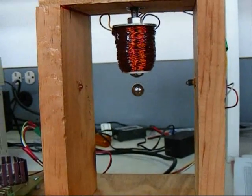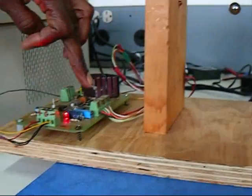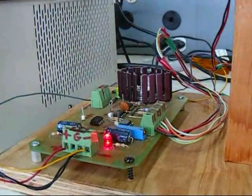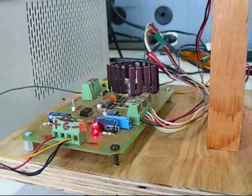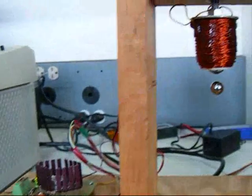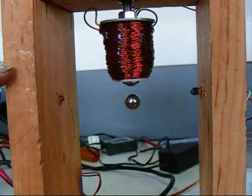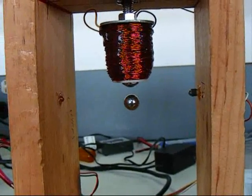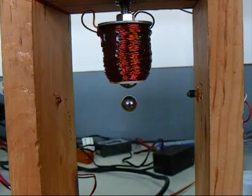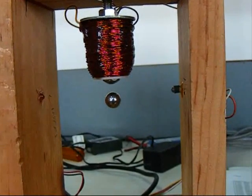When you block the infrared signal it causes the electronics to switch off the current to the electromagnet. When it switches off the current to the electromagnet the ball starts to fall. But as the ball falls it also unblocks the infrared signal and that tells the electronic circuit to switch back on the current to the electromagnet.